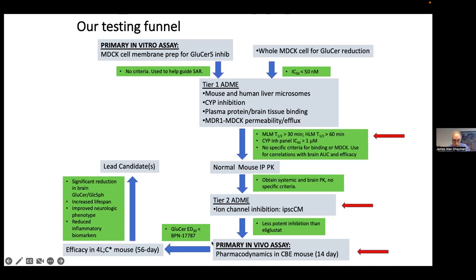And then eventually we applied two models of Gaucher disease — type 3, which has CNS involvement. One is a short-term screening model using an irreversible inhibitor of the glucosylceramide synthase. The other is a more complex mouse model that more closely phenocopies the human disease.